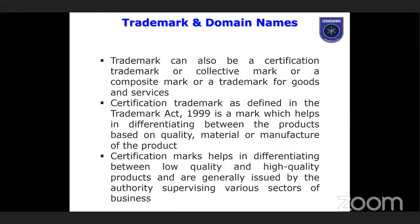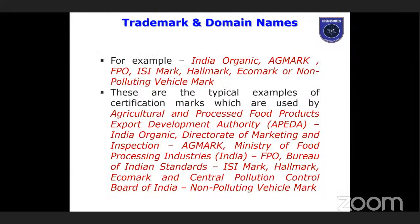The Trademark Act 1999 helps differentiate products based on quality, material, or manufacture. It is used by authorities supervising various sectors — for example, India Organic, Agmark, FPO, ISI marks. These are typical certification examples used by organizations like APEDA (Agricultural and Processed Product Food Export Development Authority), Agmark, Ministry of Food Processing, Bureau of Indian Standards (BIS), ISI mark, Hallmark, Ecomark, Central Pollution Control Board of India, and Non-Polluting Vehicle Mark — all certifications under the Trademark Act.